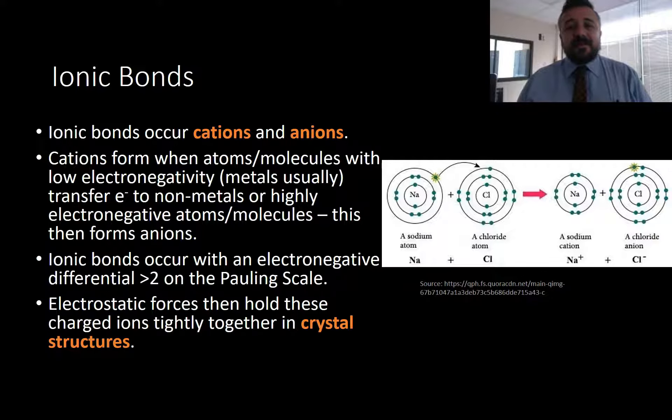Now, once this happens, we've got these two species, these two ions, which have opposing electrostatic charges. And this means that these really strong electrostatic forces will pull them together and form crystal lattices or crystal structures.